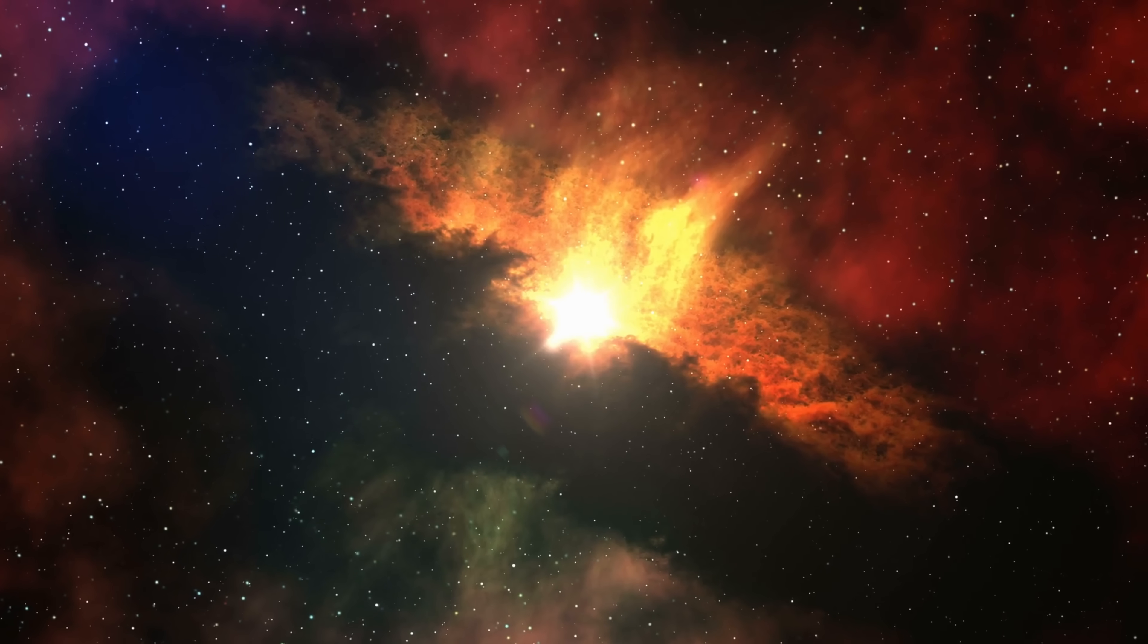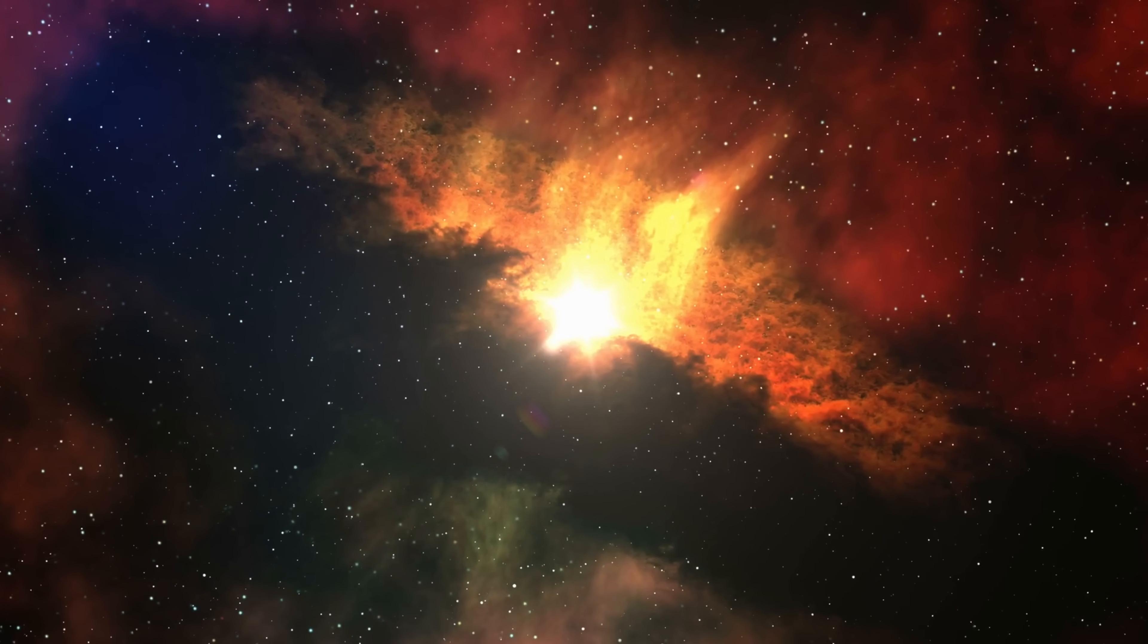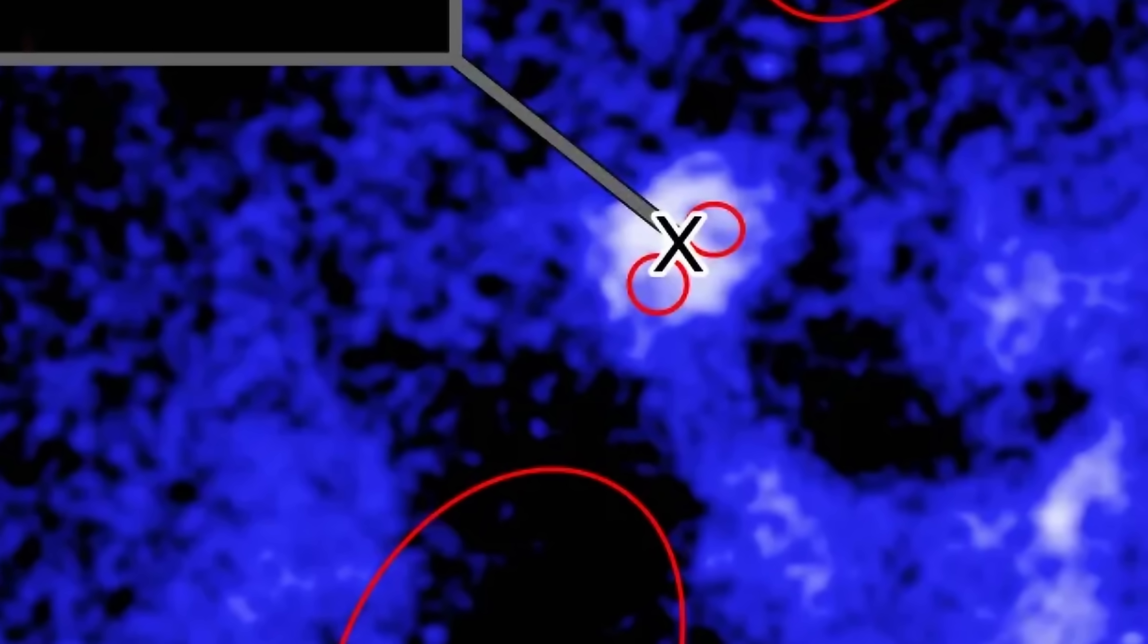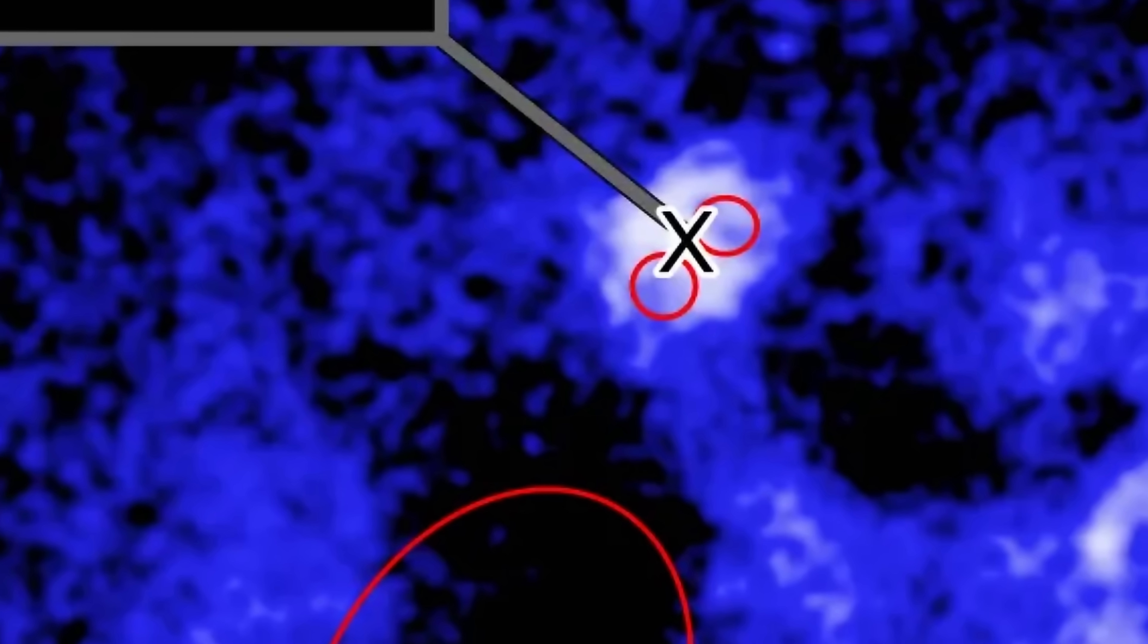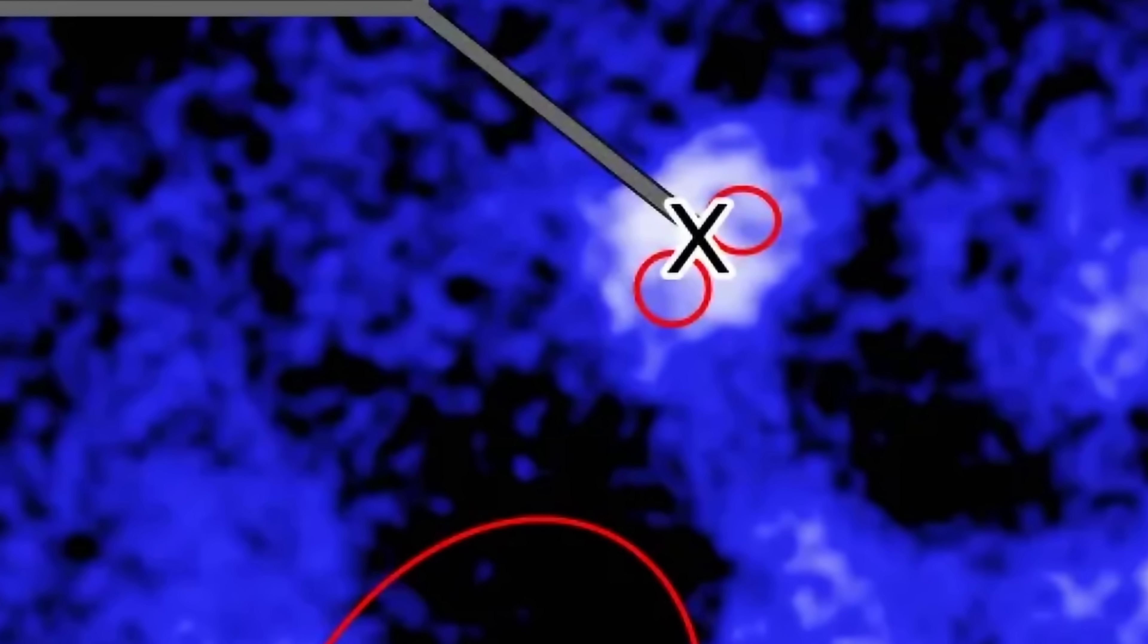The direction of these beams is completely different from what it is today, basically suggesting that millions of years ago these powerful jets were pointing in a very different way compared to now.